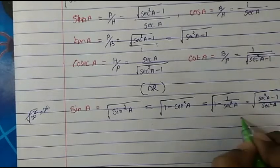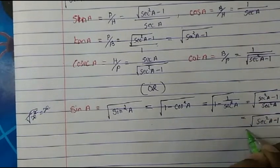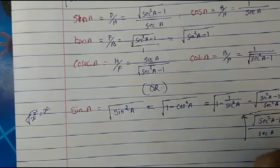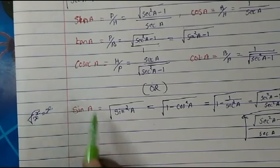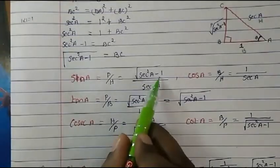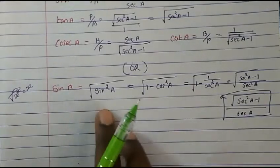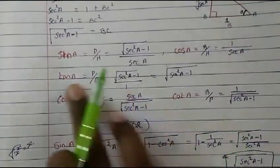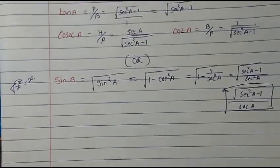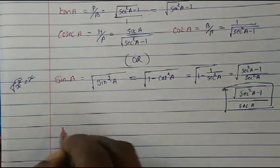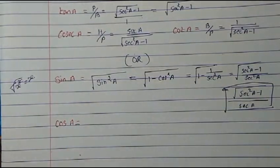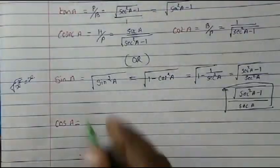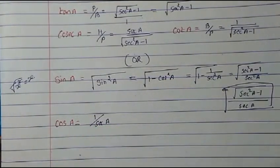You see, same answer both ways. For cos A using identities: cos is the inverse of sec, so directly cos A = 1/sec A. For tan A: tan A = √(tan²A), and tan²θ = sec²θ − 1, so tan A = √(sec²A − 1). We have now converted tan into sec.